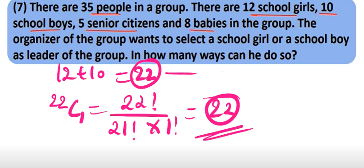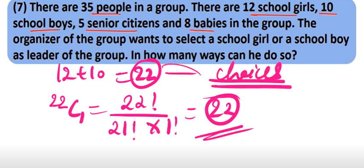So how many choices? 22 choices — 22 ways. We can do that.